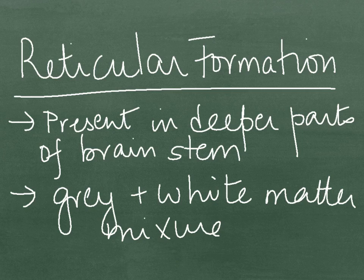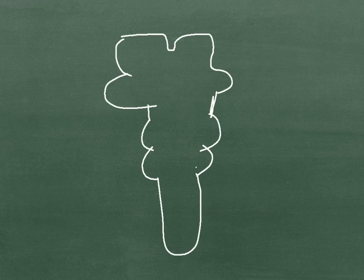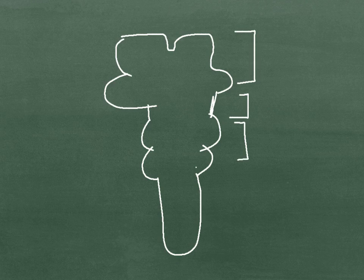Reticular formation is present in the deeper parts of the brain stem, where the grey and white matter are mixed. The basic parts of the brain are the forebrain or prosencephalon, the midbrain or mesencephalon, and the hindbrain or rhombencephalon, which consists of the pons and the medulla, and the spinal cord.